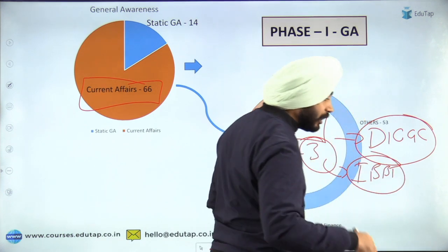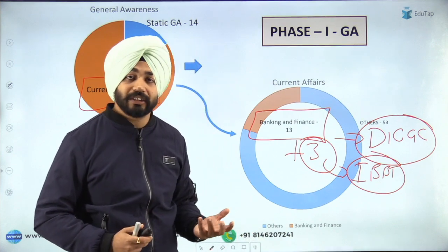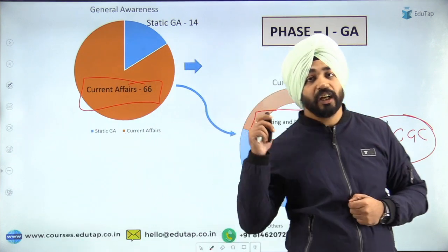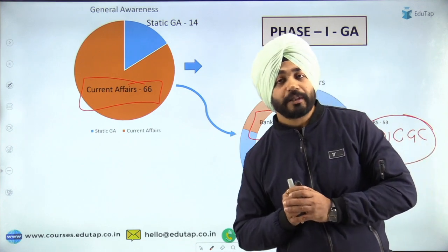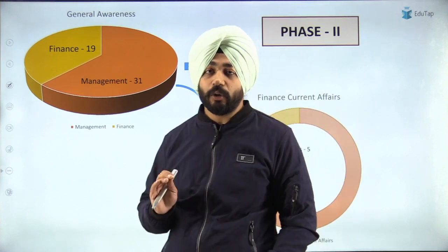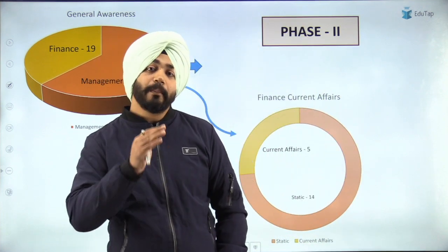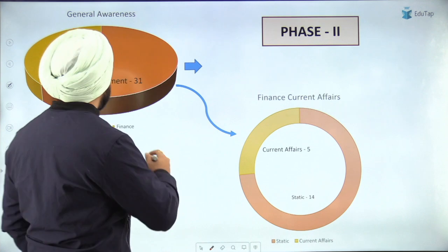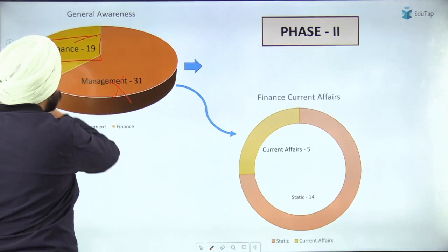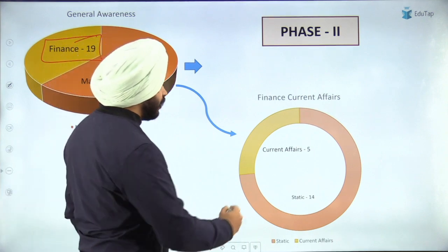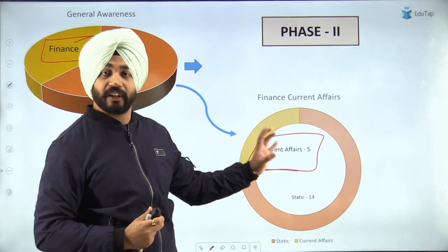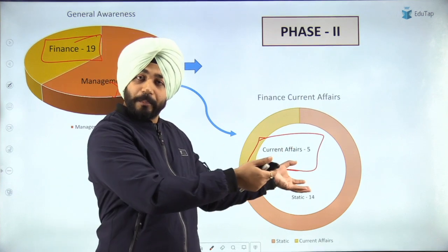We can also talk about corporate resolution, CSR, and IBPA — these can also be part of finance current affairs indirectly. Questions have been asked on these specific lines as well. If I talk about Phase 2, many students have a doubt that finance current affairs does not come, but in the management paper, out of the 19 marks from the finance paper, five marks of questions in the objective paper were from current affairs.